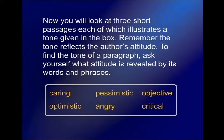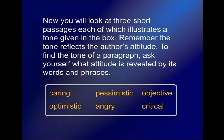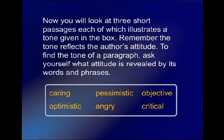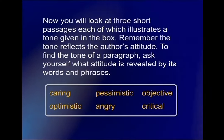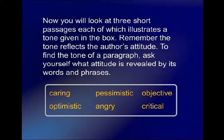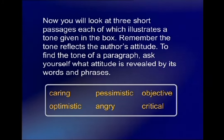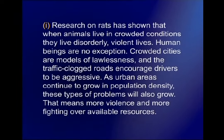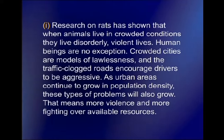Now you will look at three short passages, each illustrating a tone, and choose from six words in the word bank. Remember that tone reflects the author's attitude. To find the tone of a paragraph, ask yourself what attitude is being revealed by its words and phrases. The words are: caring, pessimistic, objective, optimistic, angry, critical. The first paragraph: 'Research on rats has shown that when animals live in crowded conditions they live disorderly, violent lives.'